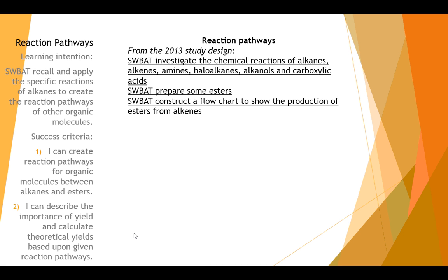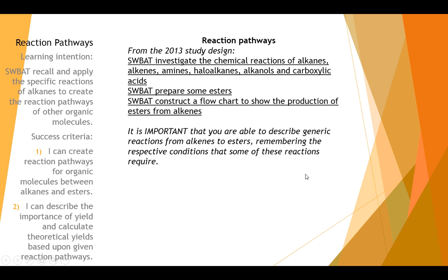So let's have a look at reaction pathways. It's important to know, because from the study design for chemistry, you have to know the reactions of alkenes, alkanes, and it means haloalkanes. Halo means like halogens, like chlorine. If it's chlorine attached to it, it's like halogen. Haloalkane, alkanols and carboxylic acids. You need to be able to prepare esters, and therefore know their reaction pathways. And be able to construct a flow chart to show the production of esters from alkanes. And you need to be able to describe generic reactions from alkanes to esters. And you need to know all the parts in the middle.